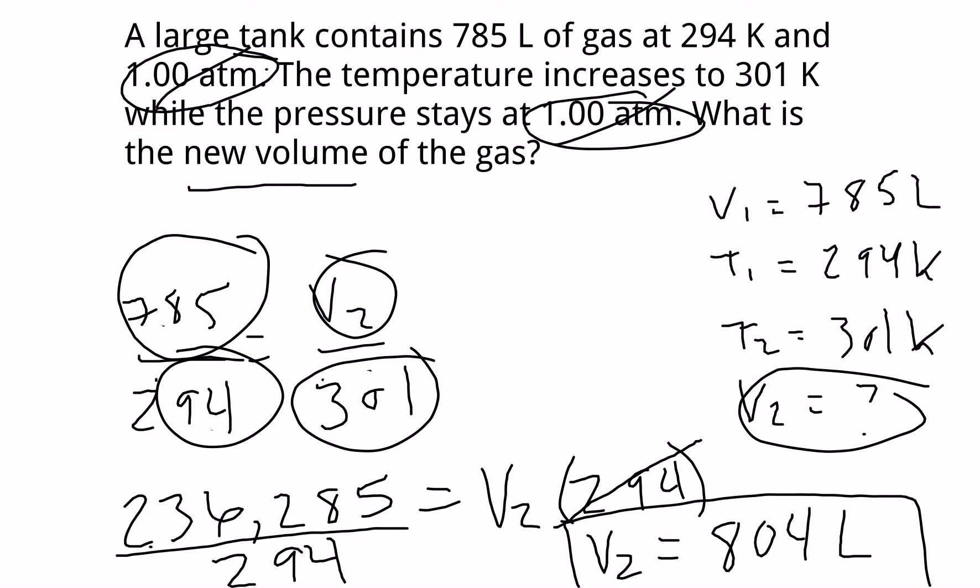If you did one with Avogadro's, it would work the exact same way. You would have moles and volume. You would hold the others constant. And then you would solve for the missing piece.